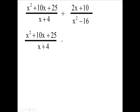We copy down the first one, you keep the first fraction, you change this to a times and you invert the second fraction. So the x squared minus 16 goes on top and the 2x plus 10 goes on the bottom. So you keep the first fraction, you change this and you flip the second fraction.